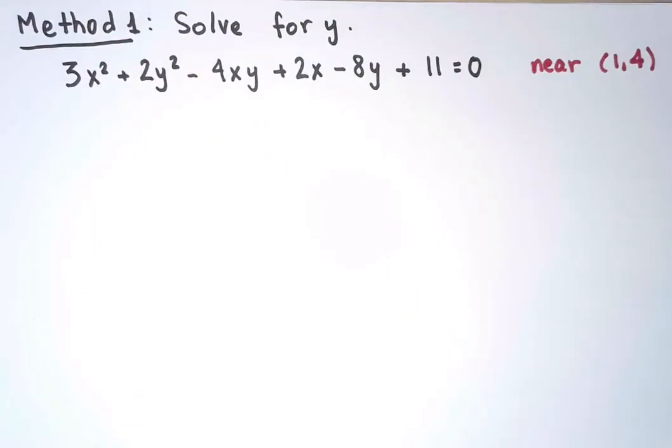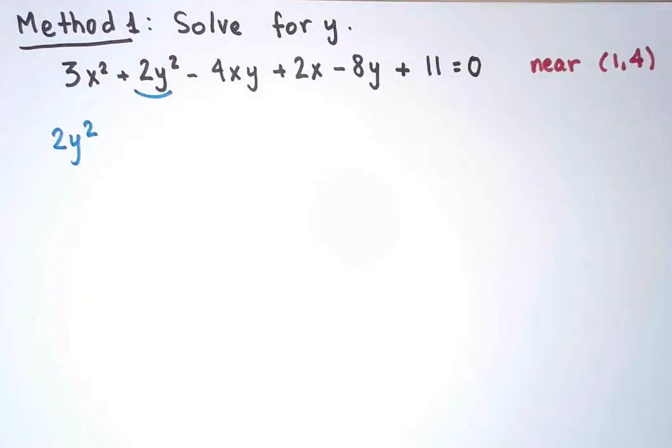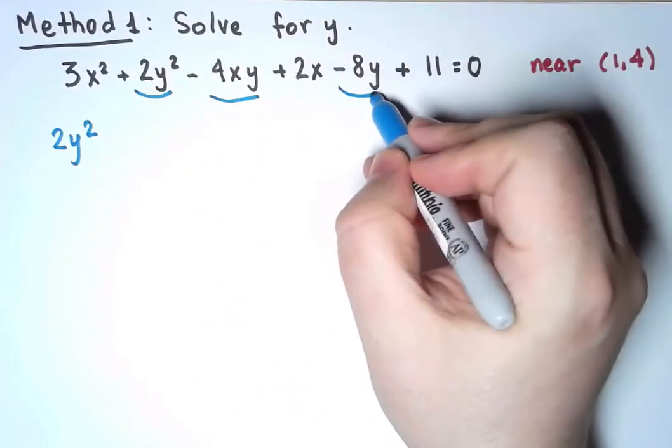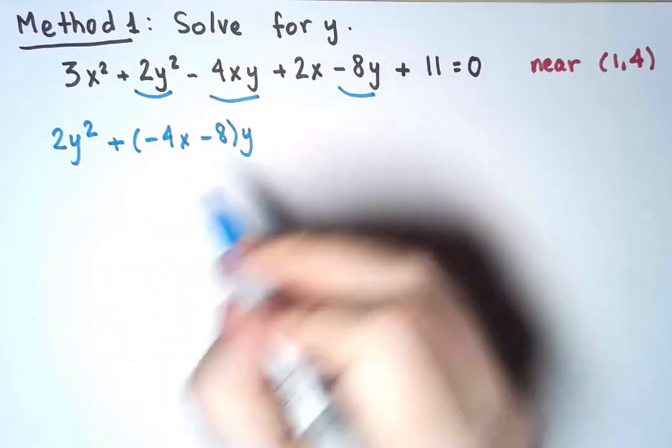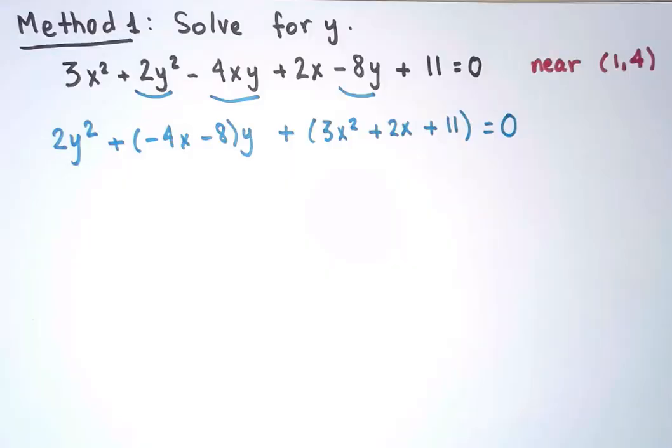I'm going to make this more apparent by grouping terms that have the same power of y together. This, 2y², is the only term with y². And then I have two terms with a single y, which are these two. And then the rest of the terms don't have a y. So, a quadratic equation in y I can solve using the quadratic formula. It's going to be a bit long. Patience, and we'll do it.